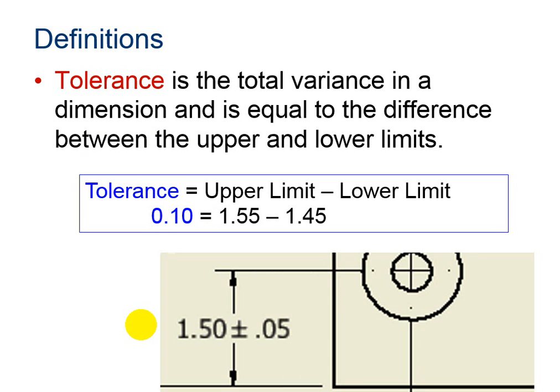The tolerance is the total variation in a dimension and is equal to the difference between the upper and lower limits. So in our example, the upper limit was 1.55, and when I subtract the 1.45 for the lower limit, my total tolerance is 1 tenth.